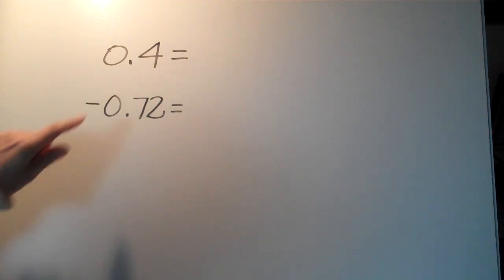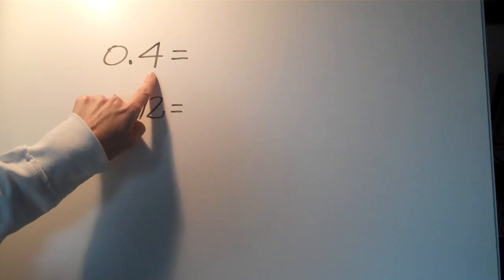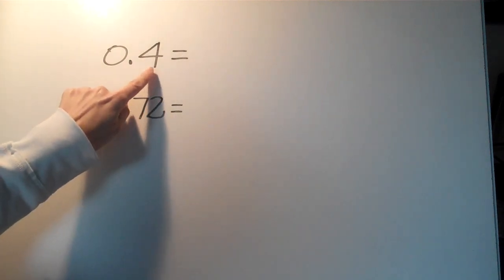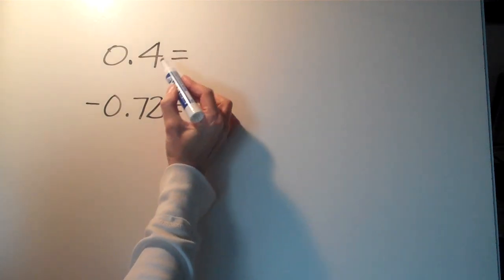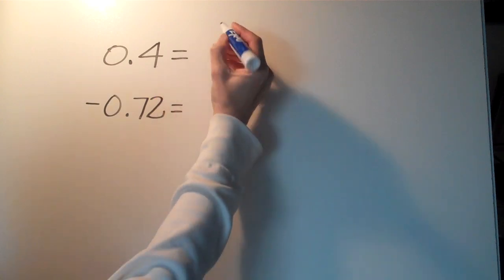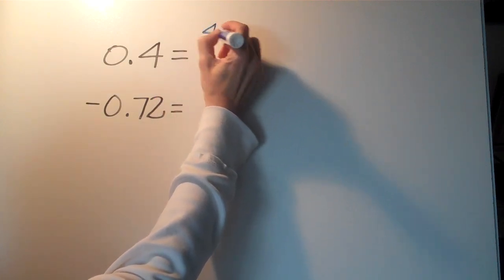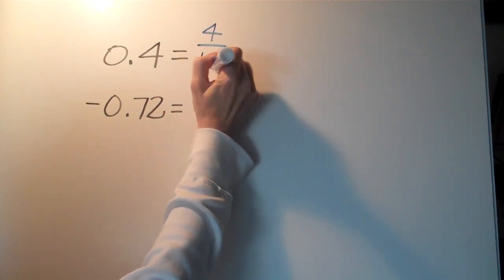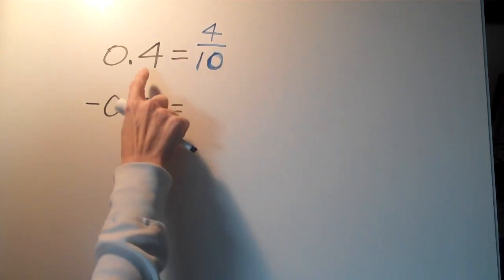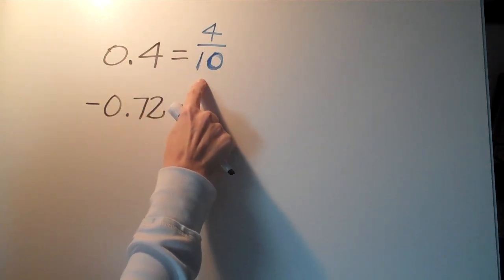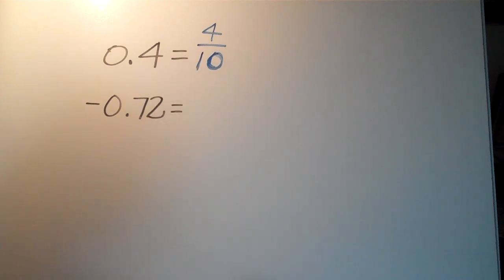First thing you should notice is that if you were to properly read this, this would be in the tenths place, so this is read as 4 tenths. That actually helps us a lot because if you can read this properly as 4 tenths, you know that you could already make that a fraction. As long as you can read it, so 4 tenths if we were to write it as a fraction is simply 4 over 10.